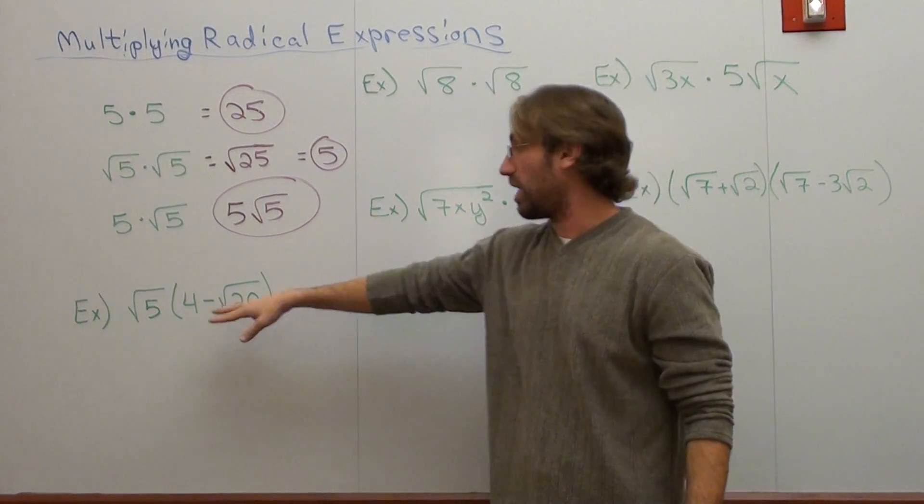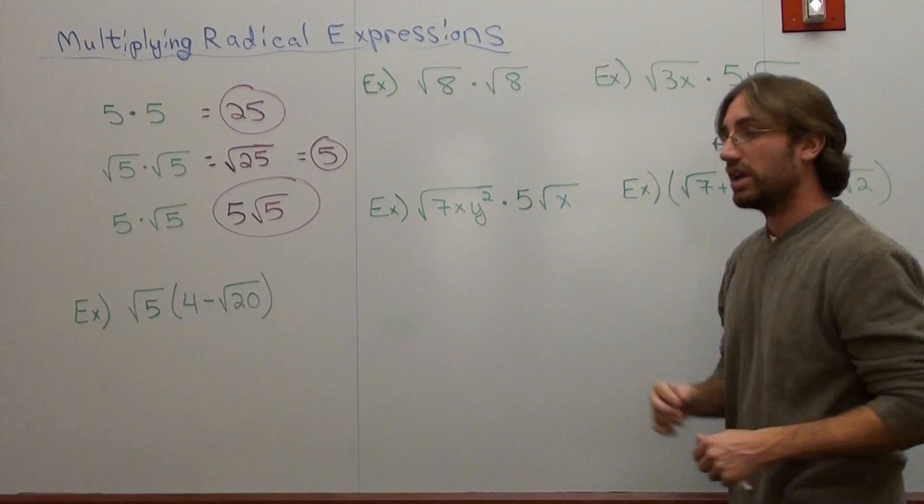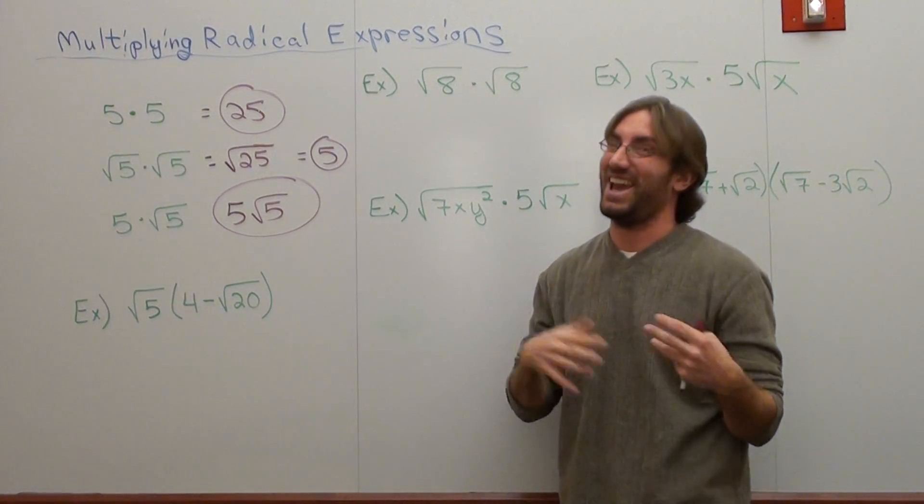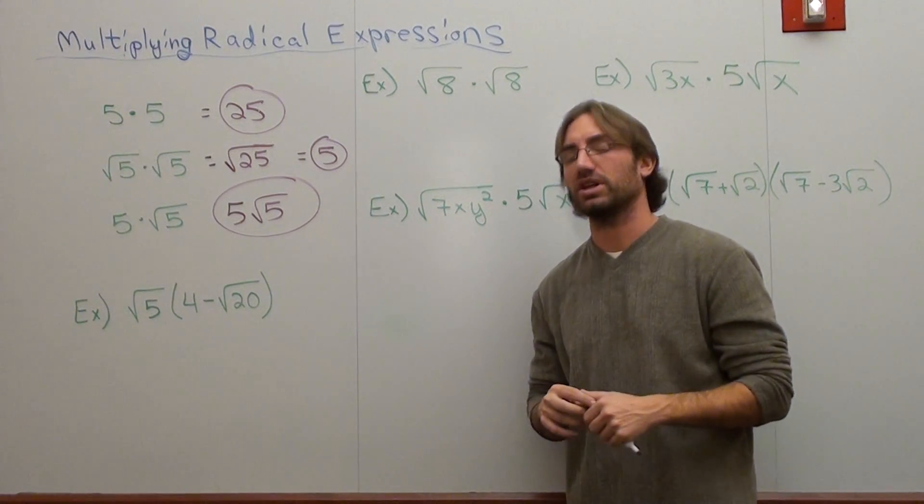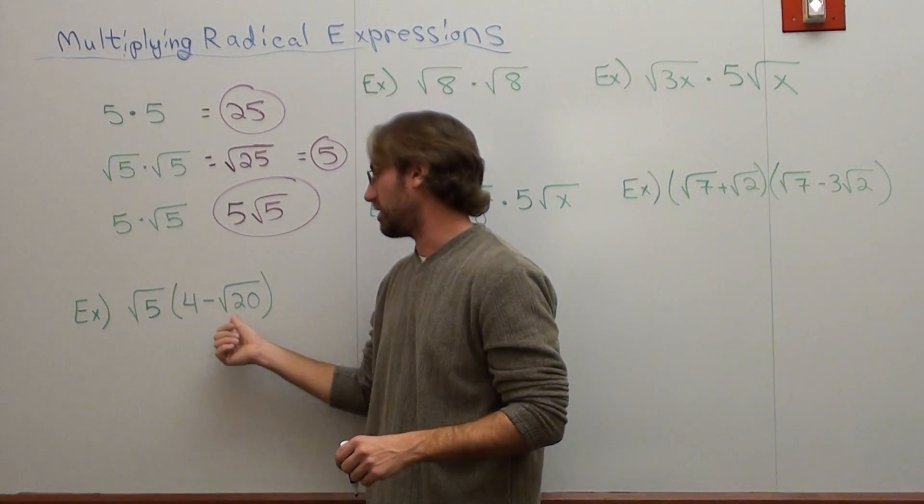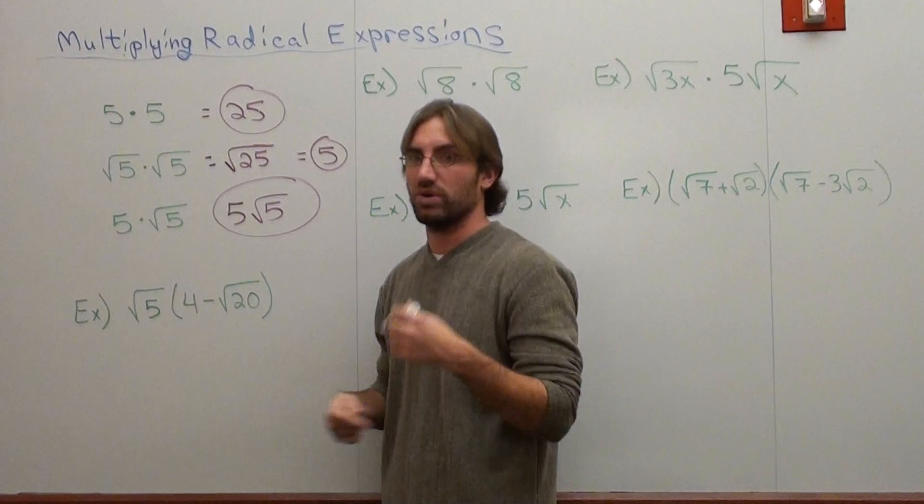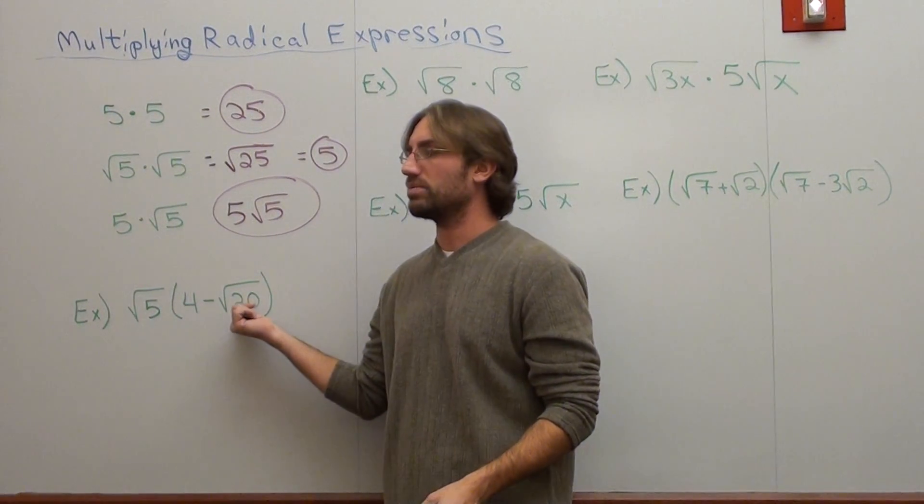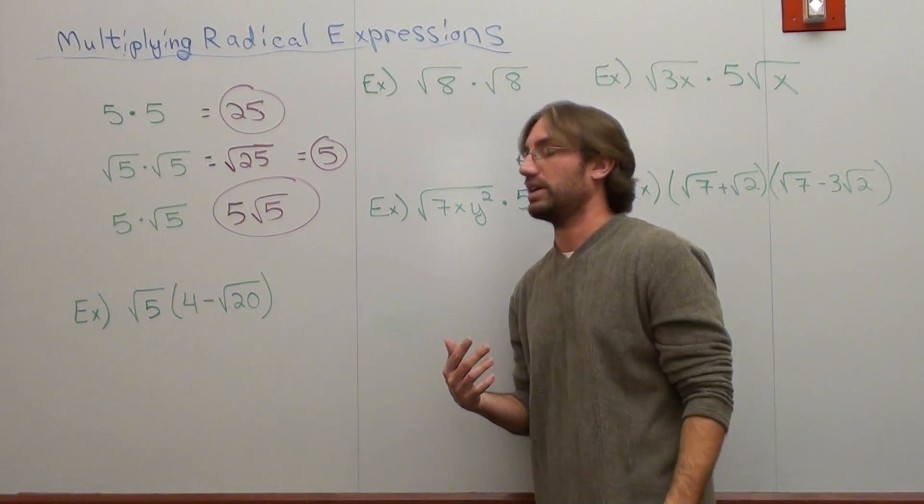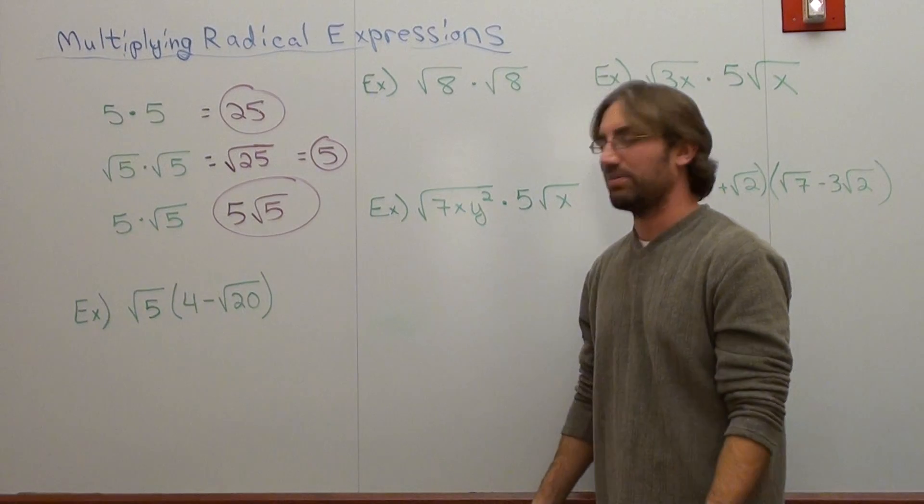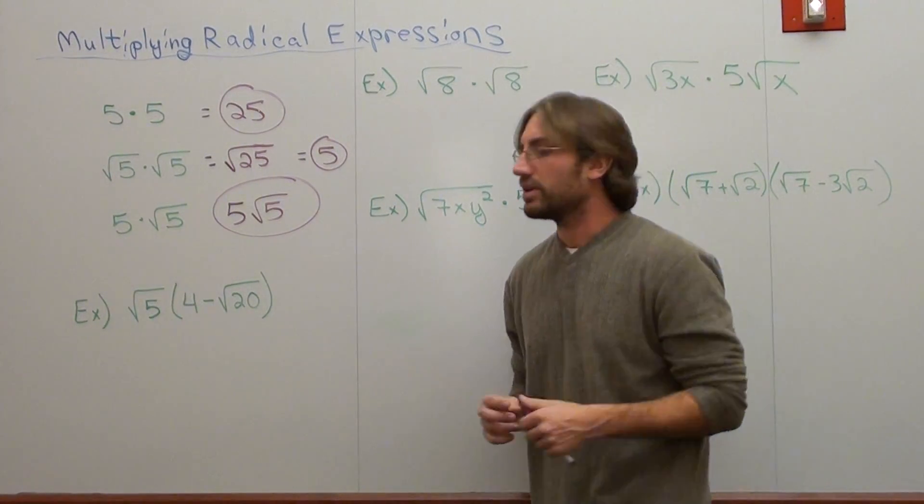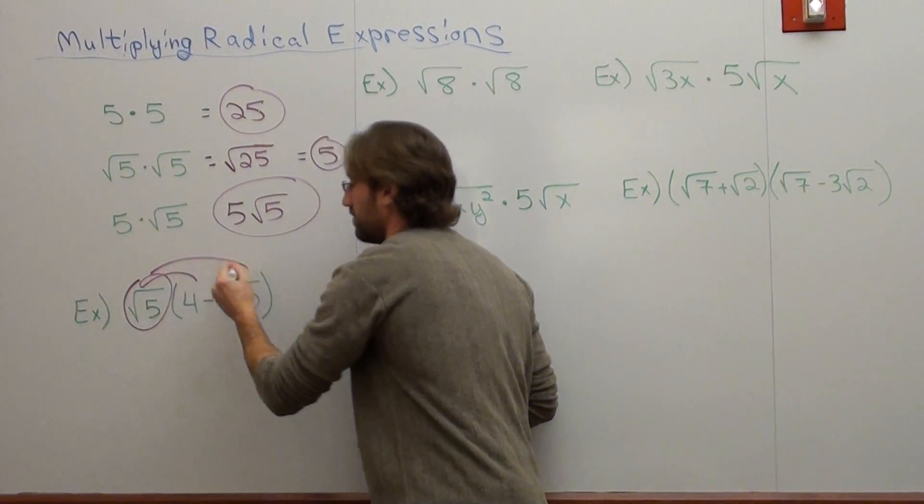So I want to do this problem first, and then do a series of examples afterwards to try to make it a little bit easier for you to multiply. And then we're going to work on division, and then we're going to be adding and subtracting, which is actually the most difficult when it comes to square roots. So what I want to do with this one is I can't subtract square root 20 from 4. They're not like terms. Some people will argue, can't you simplify the square root 20? And the answer is, yeah, I could.